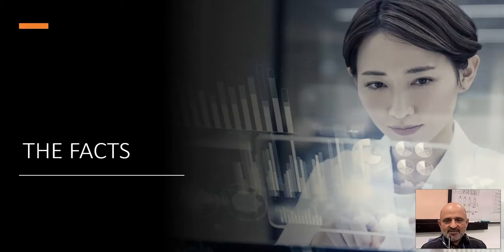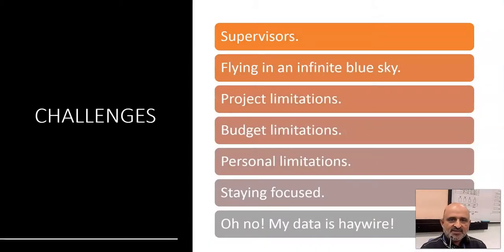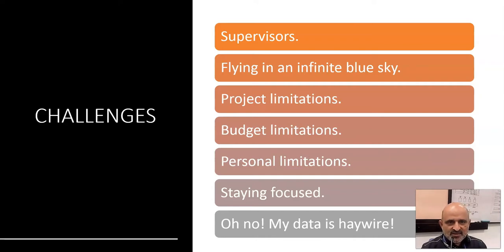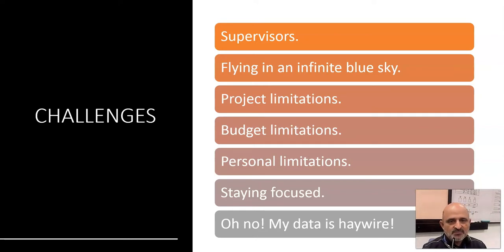Here are the facts. You have decided to embark on your journey of writing a thesis, and you want to fly in an infinite blue sky — you want to achieve a Nobel Prize. However, you have limitations. The first limitation is your supervisor, with whom you must establish a professional working relationship. The supervisor will also have limitations in terms of the project and budget, which will curtail the scope of your thesis.